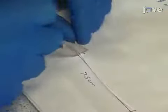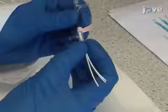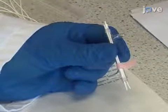Using a scalpel, cut 75mm long fibers and insert three fibers into each module, leaving approximately 7mm excess length at each end.